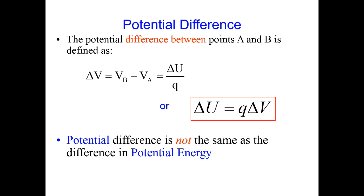This is pretty much the same as gravity. However, if we have a negatively charged particle, everything flips. The negatively charged particle feels a force that is in the opposite direction of the electric field. So if a negatively charged particle moves in the same direction as the electric field, it gains potential energy and loses kinetic energy. While if it moves against the electric field, it gains kinetic energy and loses potential energy.